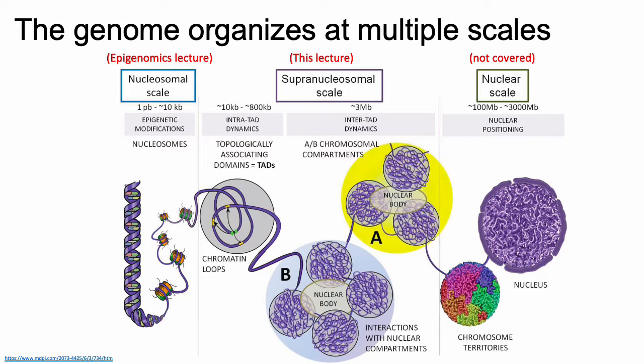We'll discuss histones and nucleosomes more in the epigenomics lecture. This lecture will focus on higher levels of genome organization — specifically the organization of entire chunks of chromosomes into what's called topologically associated domains, or TADs. A TAD is basically a contiguous segment of one chromosome for which you tend to find a lot of physical interactions between loci within the TAD, as opposed to interactions between regions inside and outside of the TAD.